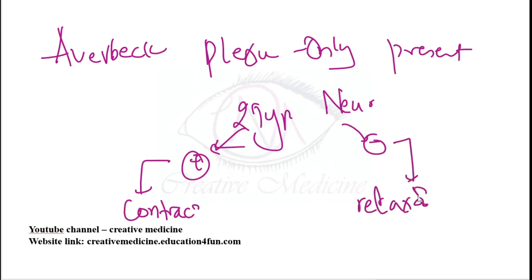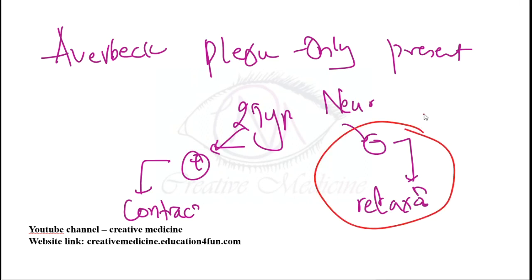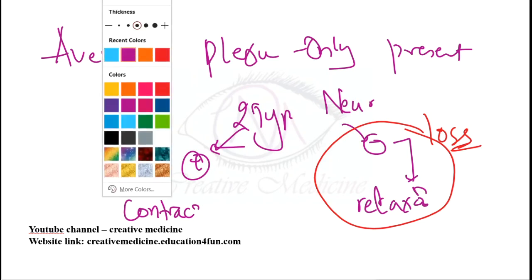In achalasia cardia, there is selective loss of inhibitory neurons, resulting in absent lower esophageal sphincter relaxation.